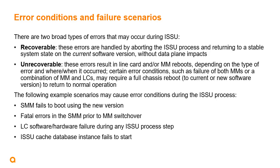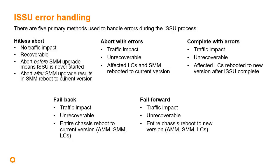The following example scenarios may cause error conditions during the ISSU process: the standby management module fails to boot to the new version; fatal errors occur in the standby module prior to the management module switchover; line card software or hardware failures during any step of the ISSU process; or the ISSU cache database instance fails to start. There are five main methods used to handle errors, depending on the type of error, when it occurred, and which components were affected.